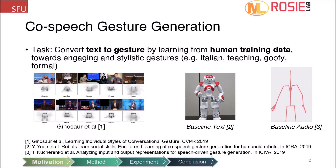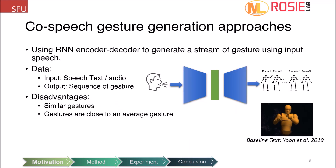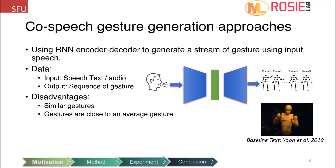The task is to produce gesture motions to accompany a speech signal. Current methods use recurrent neural network architectures conditioned on the input signal to generate gestures frame by frame. The input signal could be an audio signal, speech text, or both, and other signals such as speaker style could also be included. Yet they suffer from the posterior collapse problem, which results in repetitive gestures close to the average. This is a similar problem in image generation models that produce a limited set of blurry and similar outputs.